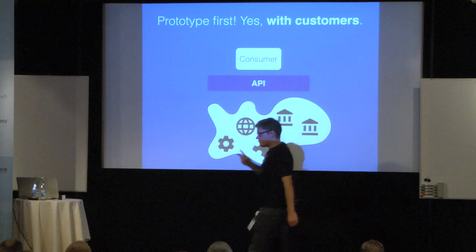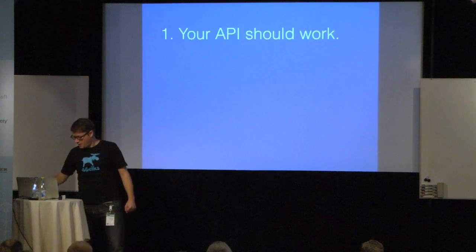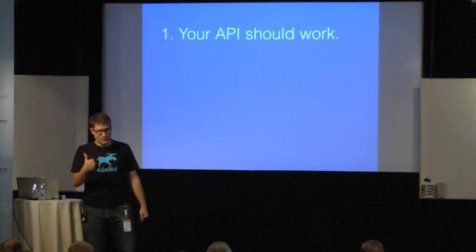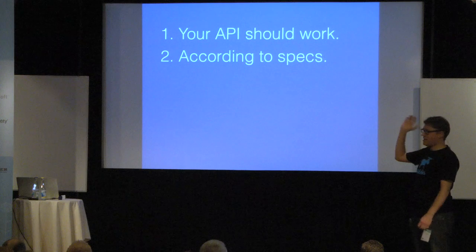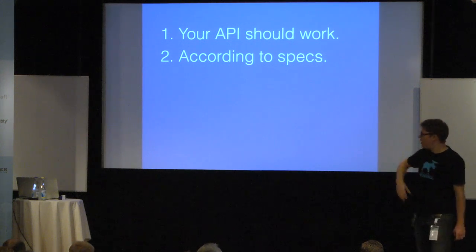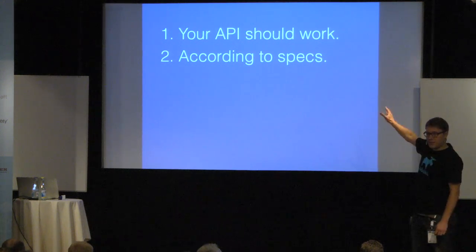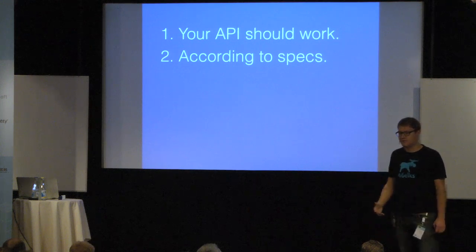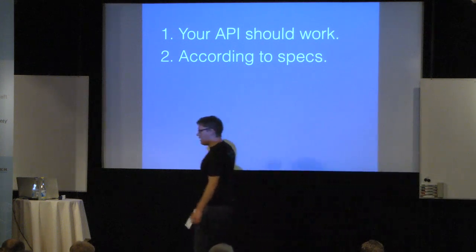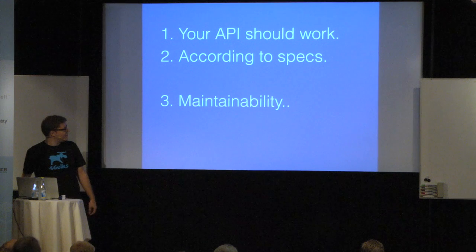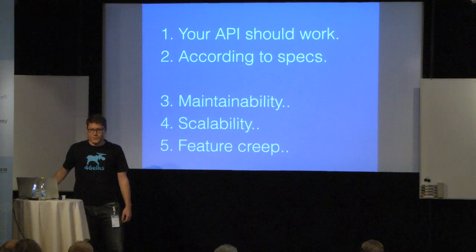There are two things that are most important when doing APIs: your API should work according to specs. Initially, scale down throughput — say you can send 10 messages per minute, say you can only do this many requests — but start here. Prove that your API actually fills the need for its consumers. Scale down, make it simple, prototype. Then come all the things like maintainability, scalability, and feature creep.